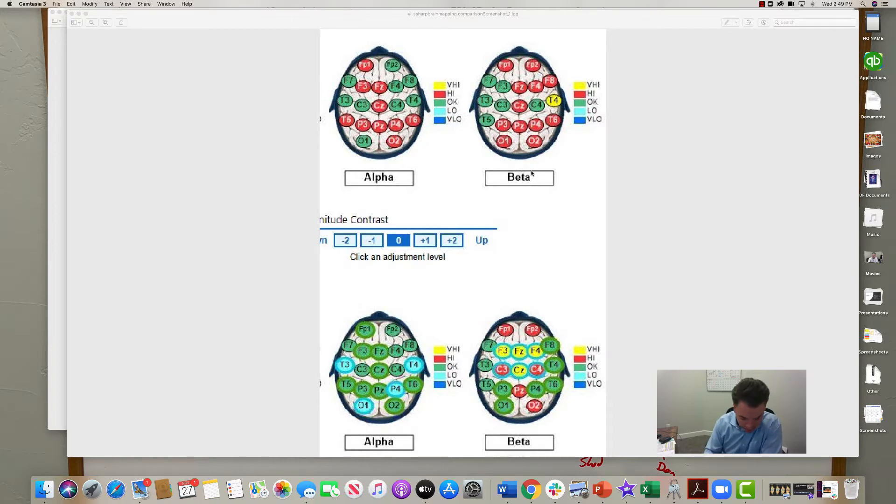You start by putting electrodes on specific parts of someone's head, and then you measure the brainwaves that are happening, what's called a quantitative EEG or QEEG.